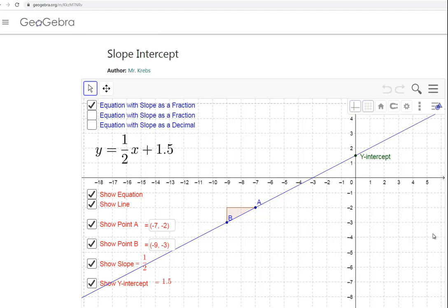The purpose of this tutorial is to show how this GeoGebra app works, and it's all about graphing the equation of a line in slope-intercept form, or y equals mx plus b form.